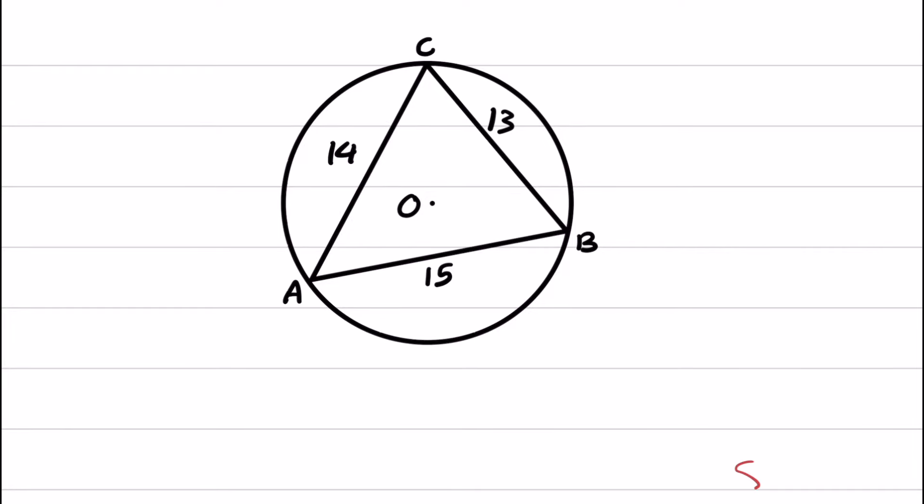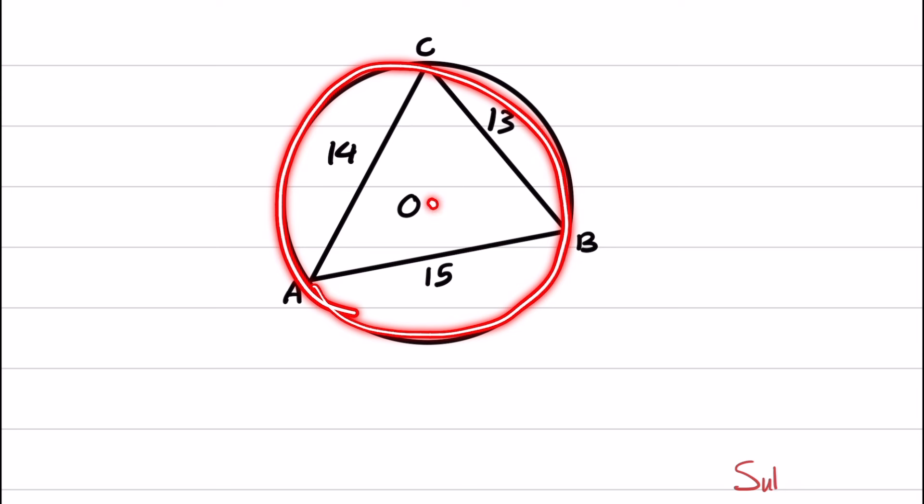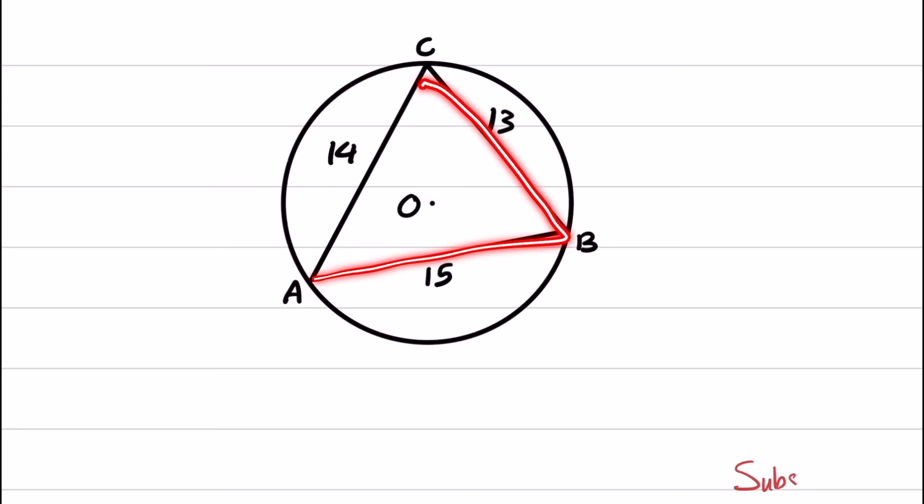Welcome to a new geometry challenge with MathDartic. In this question, a circle with center O is given and triangle ABC is inscribed inside the circle.